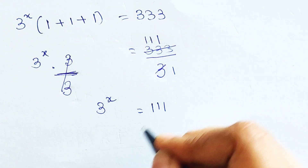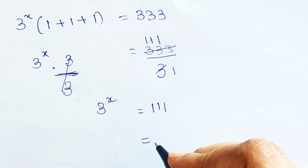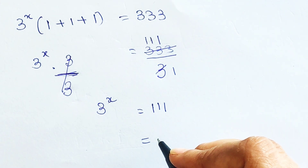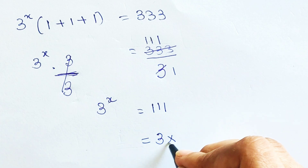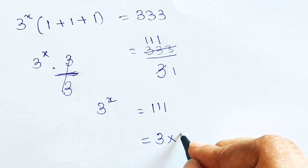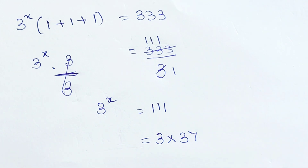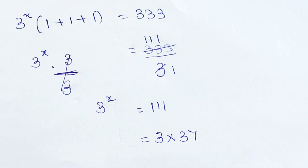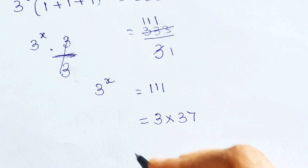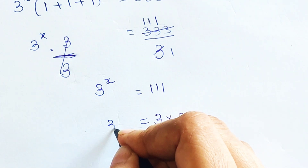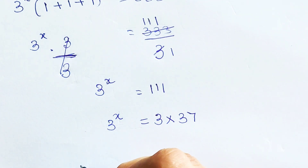But after this you are not able to do anything directly. However, if you look closely, 111 is also a product: it is 3 into 37, which gives you the value of 111.